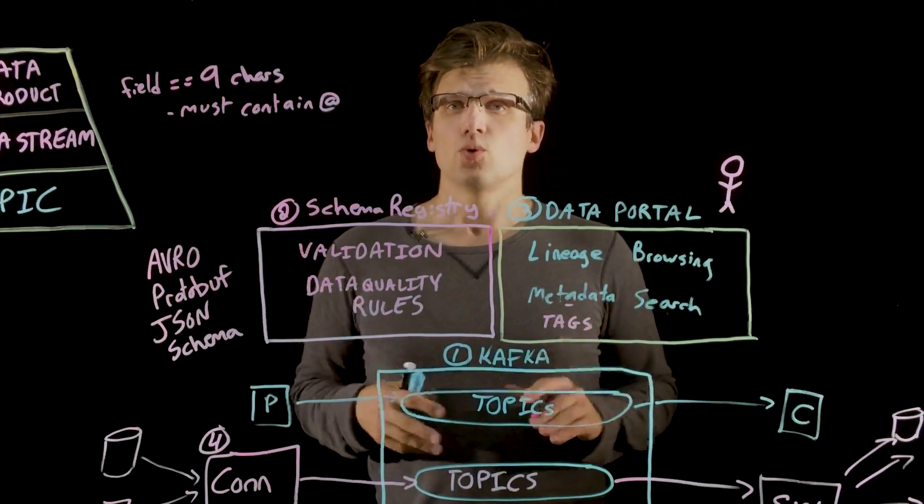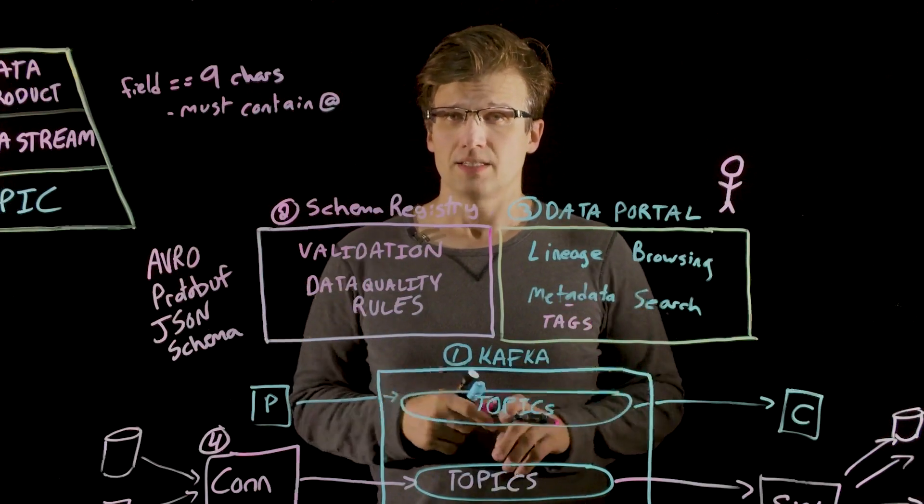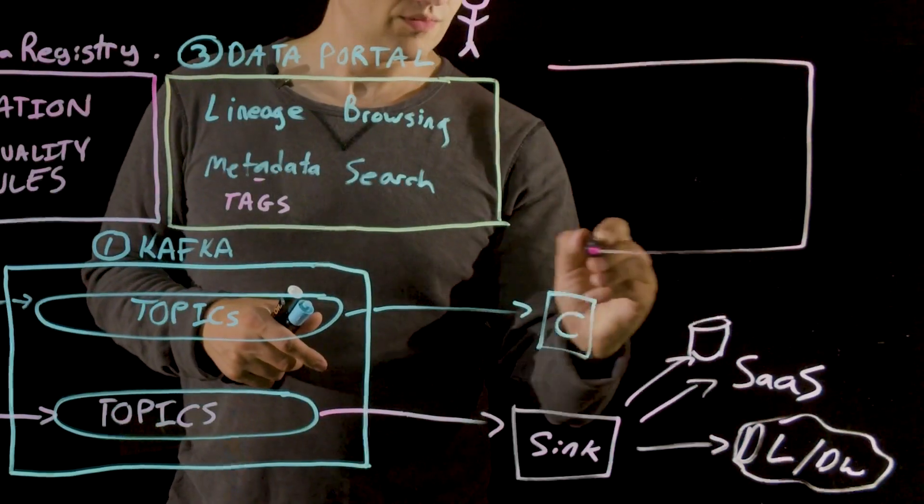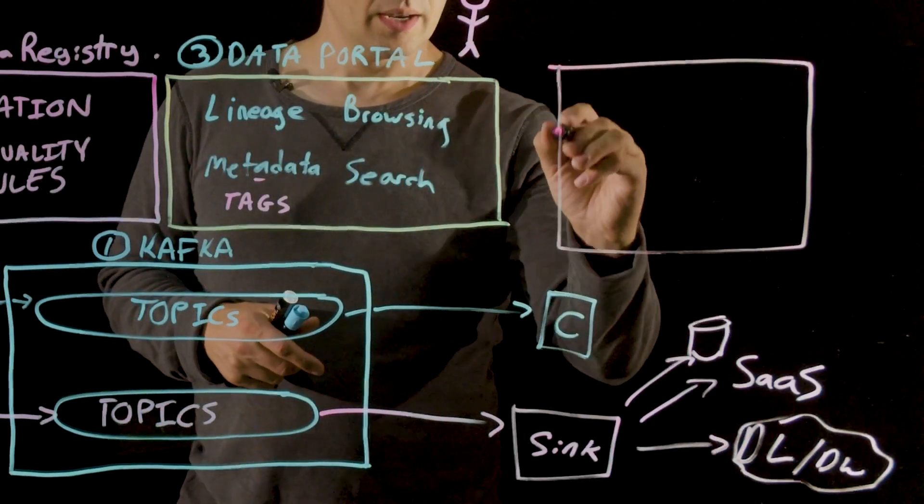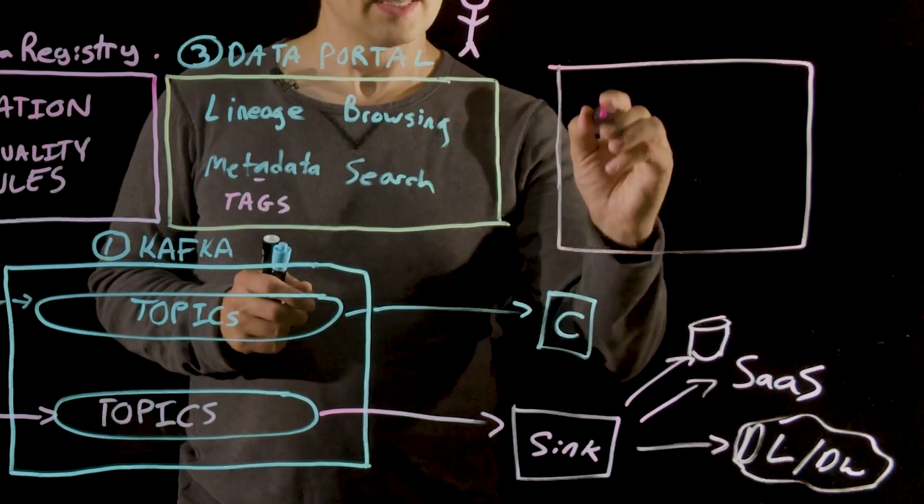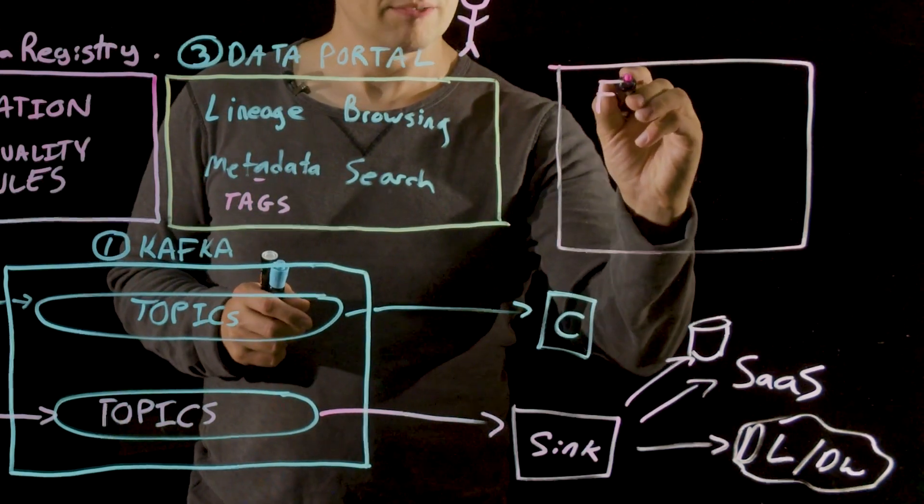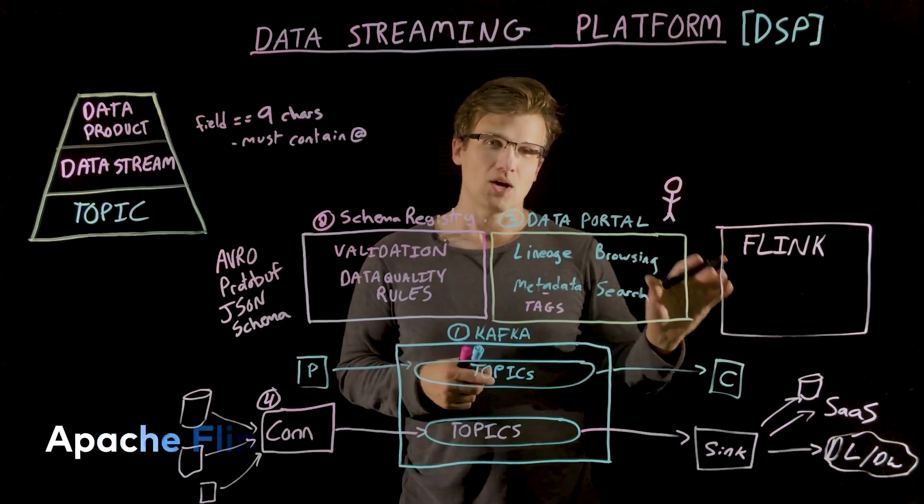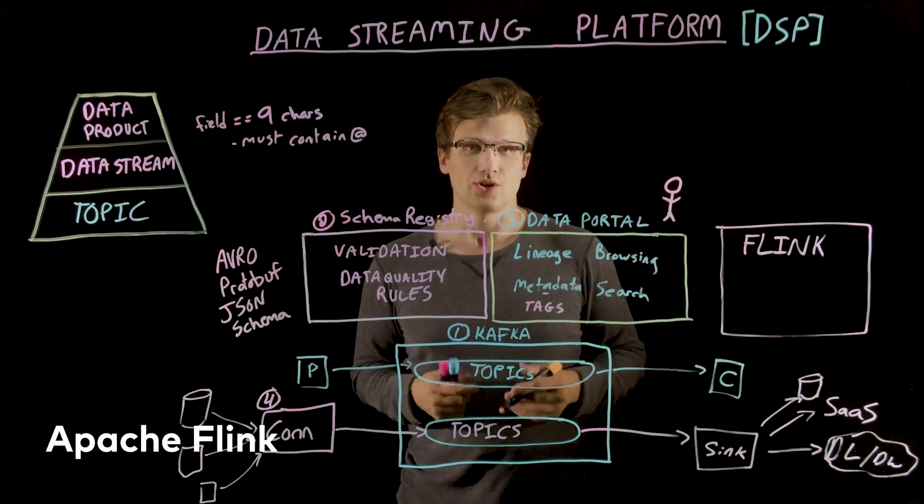Now, this brings us to our fifth piece of the DSP, the stream processor. And I'm going to draw this right over here. Now, for Confluent, this is Apache Flink.